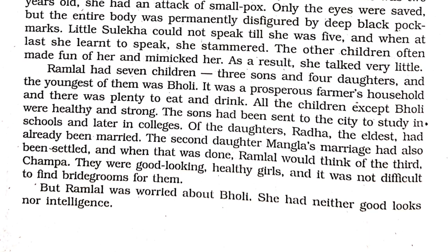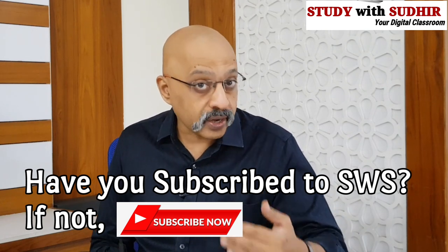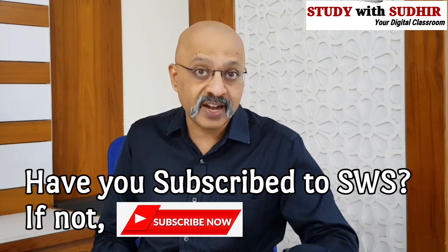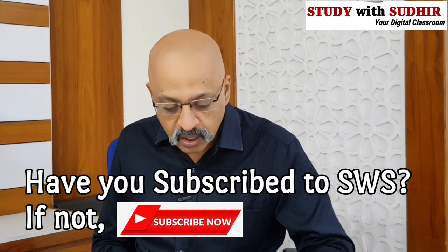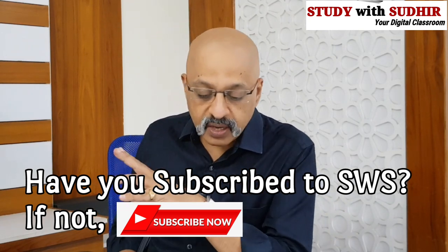Ramlal had seven children — three sons and four daughters — and Bholi was the youngest. It was a prosperous farmer's household. The sons had been sent to the city to study. Of the daughters, Radha the eldest had already been married, Mangla's match had been made, and after that he would think of Champa. But Ramlal was worried about Bholi because she had neither good looks nor intelligence — that is what her parents really thought of her.